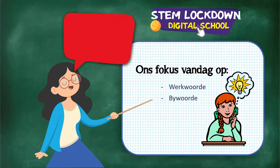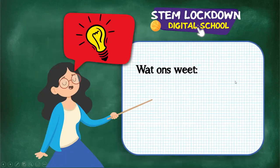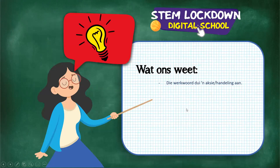What do we know about verbs? A werkwoord dui die aksie of verhandeling aan — in English it's an action word, also known in Afrikaans as 'doenwoorde' — doing words. So it's an action word. There is four types: selfstandige werkwoorde, hulpwerkwoorde, koppelwerkwoorde, infinitief. And the first two have subtypes underneath them as well.